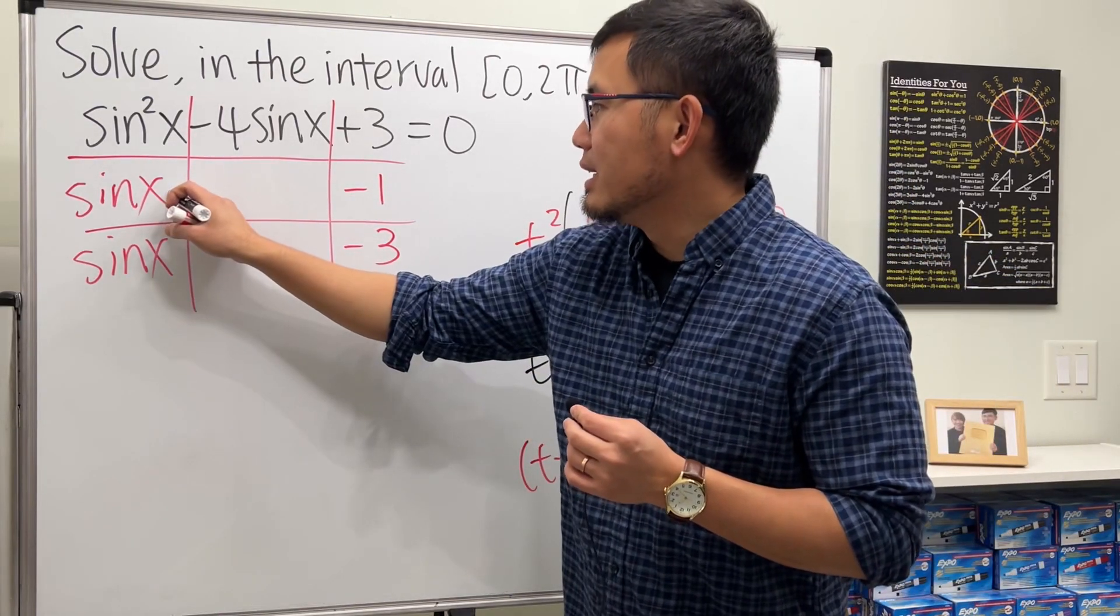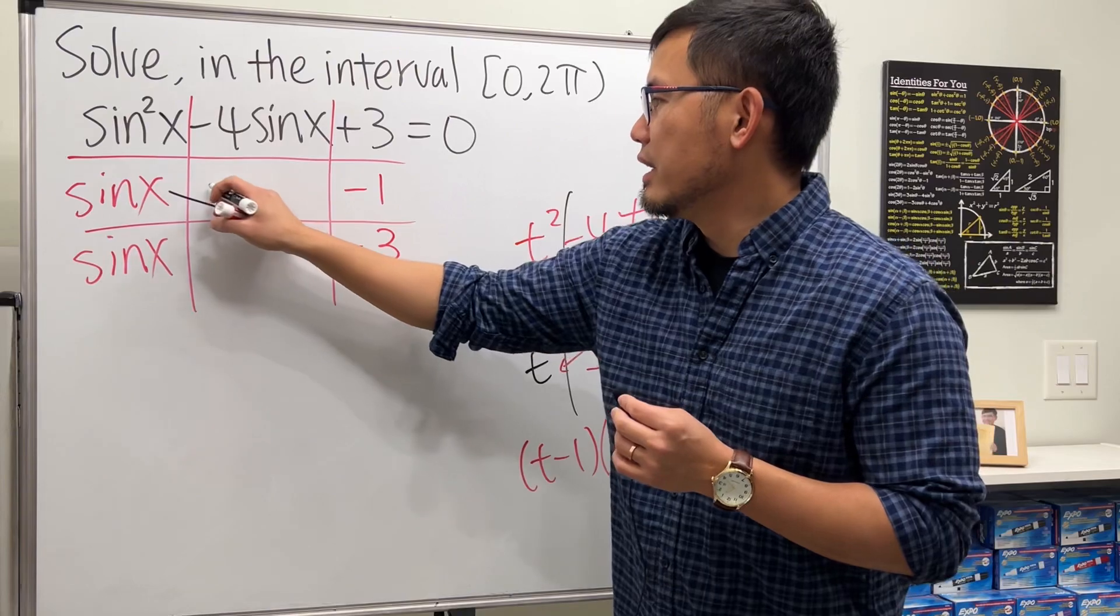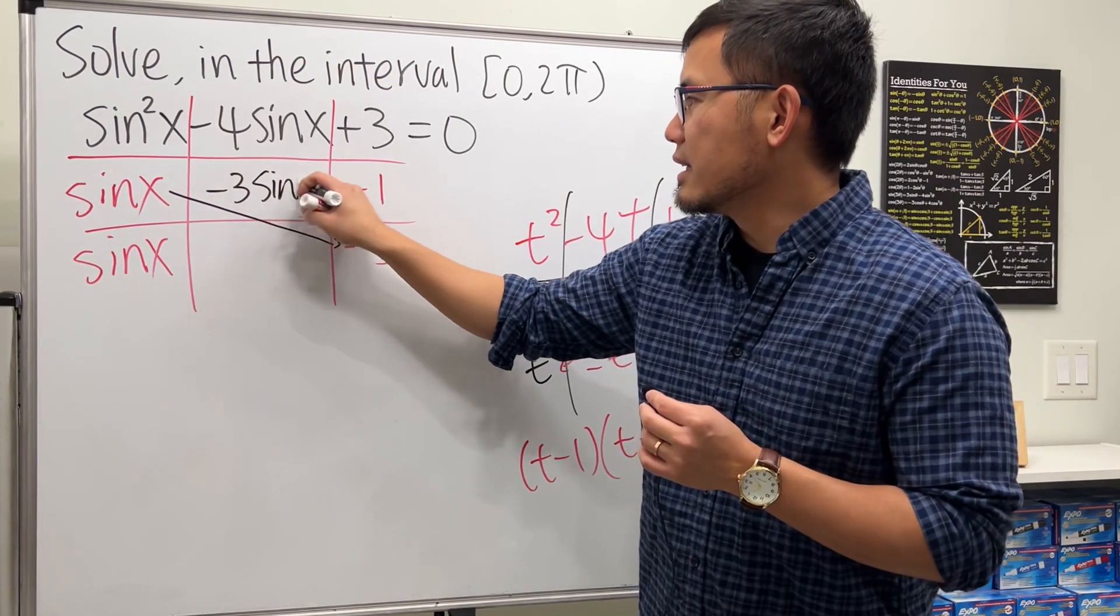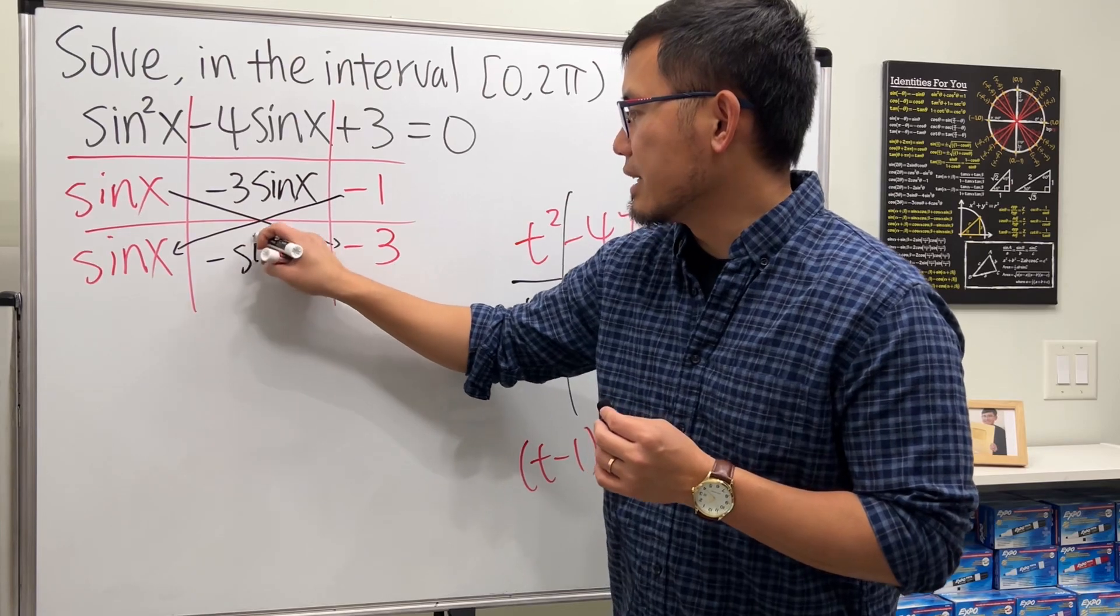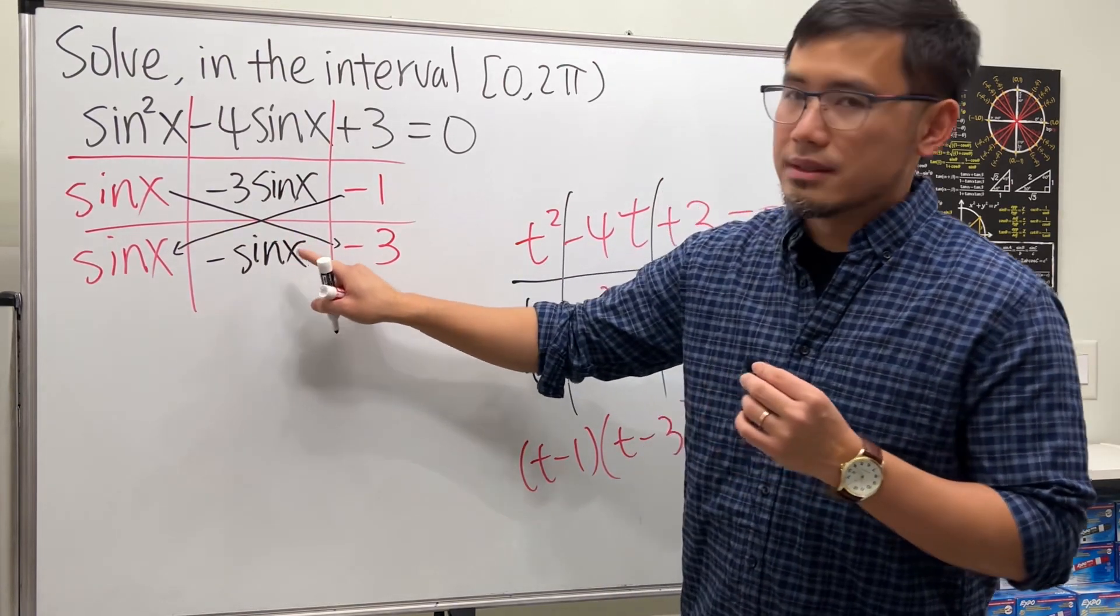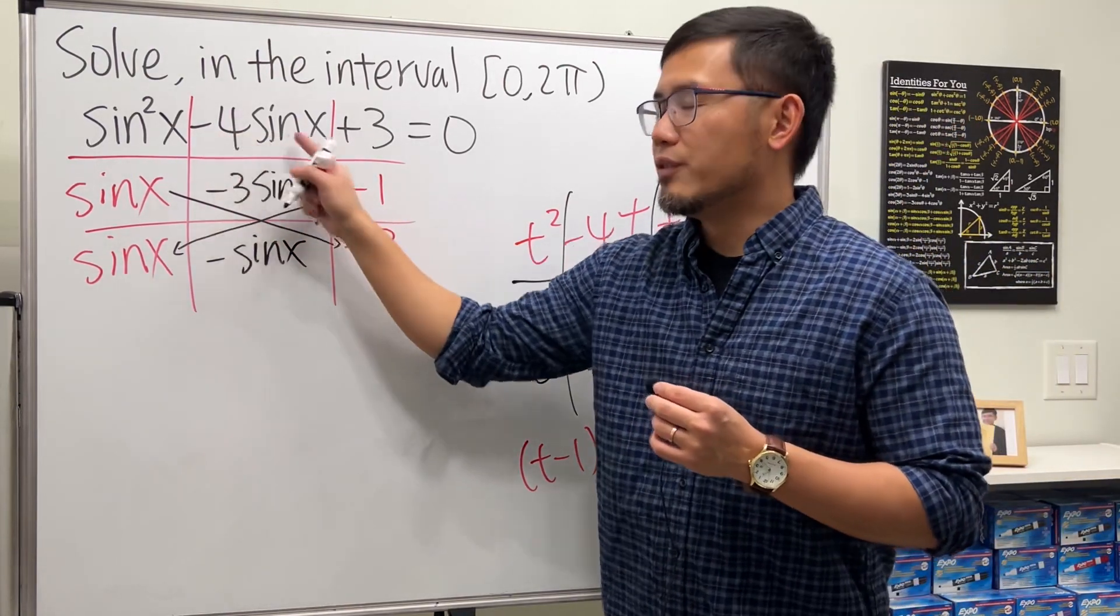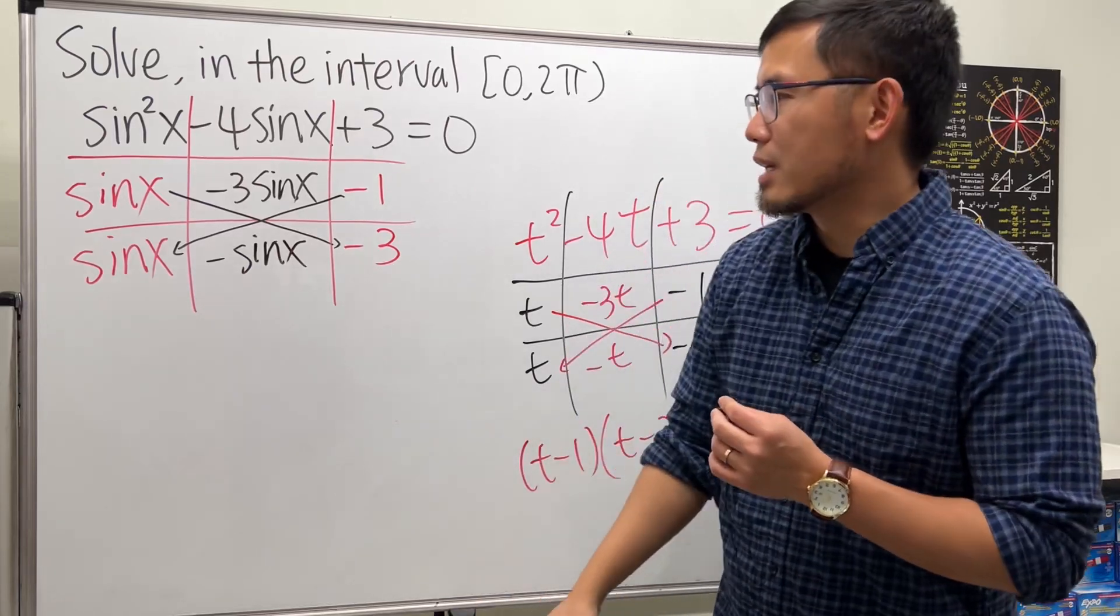And now let's cross-multiply to check. This times this gives us negative 3 sine x, and this times this gives us negative sine x. Together we do end up with negative 4 sine x. So that means we have the correct combination.